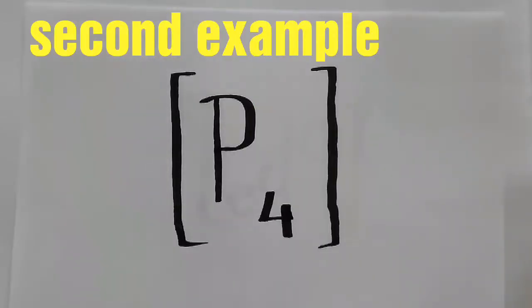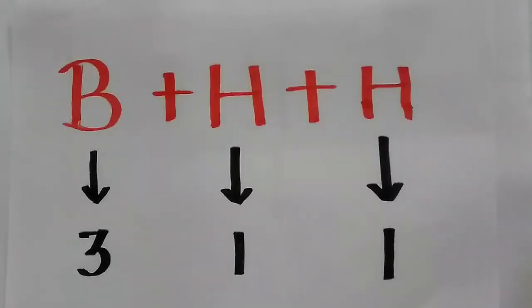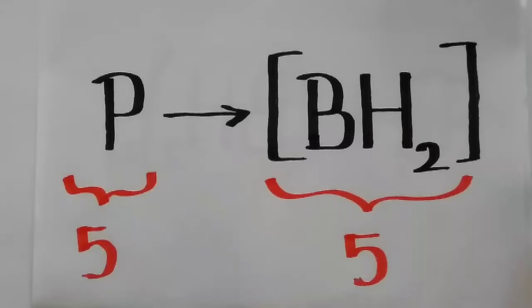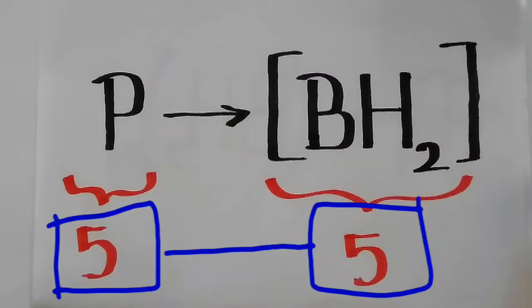In the next example, we will consider P4 molecule. Phosphorus atom belongs to group 15, so it has 5 valence electrons. When we take 1 boron atom which has 3 valence electrons and 2 hydrogen atoms which give 2 valence electrons, each phosphorus atom which has 5 valence electrons can be replaced by BH2 molecule which has again 5 valence electrons.